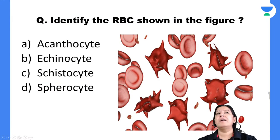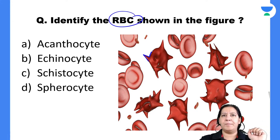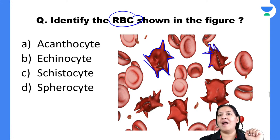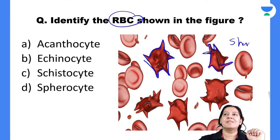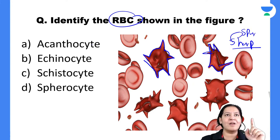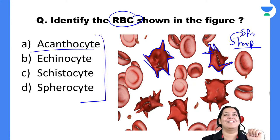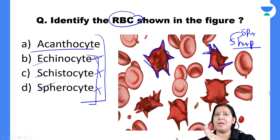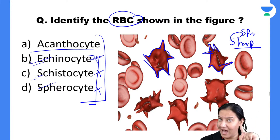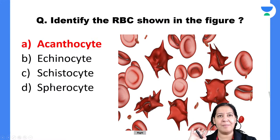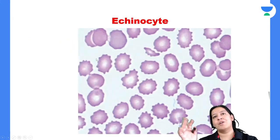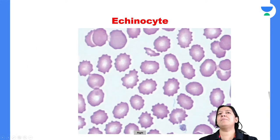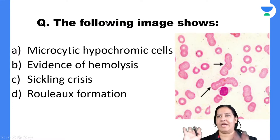Next question: Identify the RBCs shown in the image. See the projections — are they sharp or blunt? They are sharp — sharp means spur — the other name for spur is acanthocyte. If they were blunt, the answer would be echinocyte (burr cell). You should be able to identify all four options: acanthocyte (spur), echinocyte (burr), schistocyte (fragmented), and spherocyte (completely pink). Correct answer here: acanthocyte.